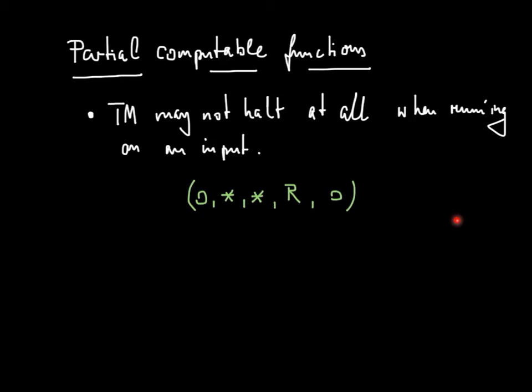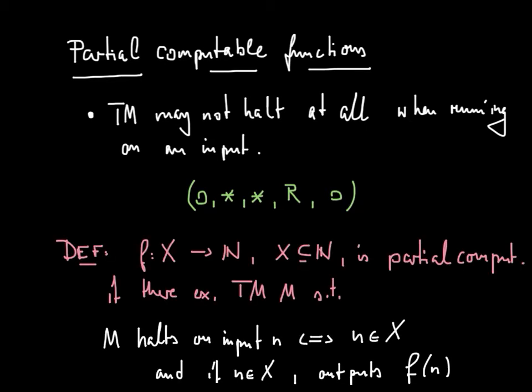But you could easily imagine a little bit more complicated Turing machine which actually halts only in certain cases, so only when it reads a one or something in the input. So in the world of modern programming languages, this would correspond to entering an infinite loop. So think of a while loop where the condition is never satisfied, and hence the program never gets out of that loop.